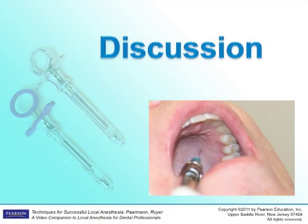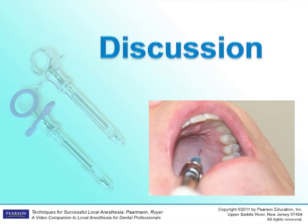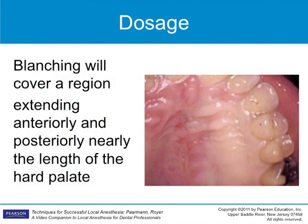Possible complications include pain or necrosis of soft tissue due to the vasoconstrictor or high concentration of anesthetic. If a four percent anesthetic is utilized for this injection, the amount of solution should be reduced to one-third or one-half a carpule. If you have difficulty achieving enough depth of insertion, move the insertion site to a nearby area where there is enough tissue thickness to accommodate the solution. The effectiveness of this injection is not dependent on the exact penetration site.